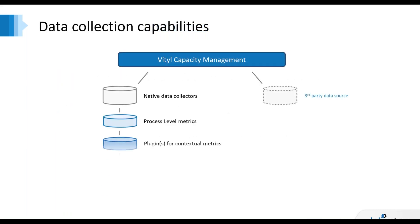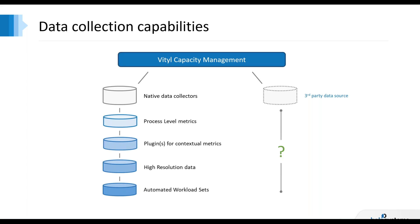To summarize: we have all these new data capabilities for our data collectors. We treat third-party data the same way as our own data, so you can use it anywhere — all the default views will populate with third-party data if available. But most third-party data sources won't give you process-level metrics, high-resolution data, or automated workload sets. If those things are valuable to you, I urge you to take a close look at our data collectors and get them installed. You can mix those — you don't need our data collectors across everything, but perhaps for systems where there's a specific need, you can get them running there.